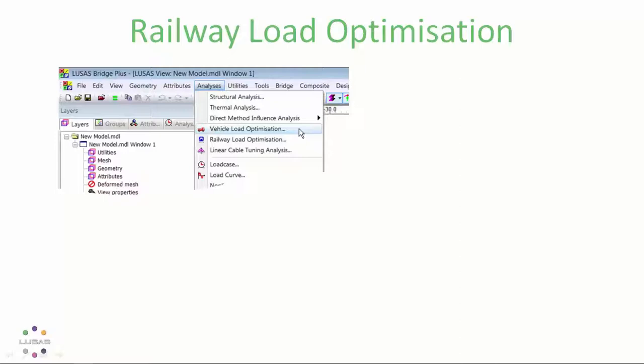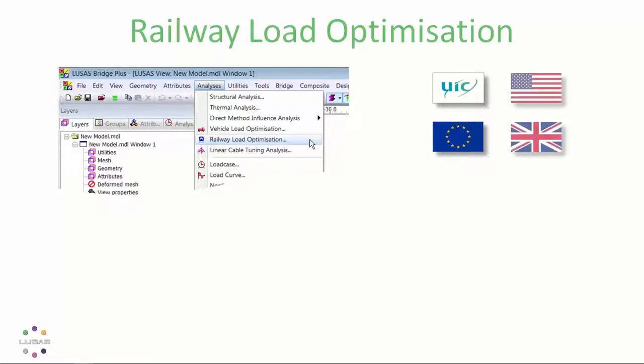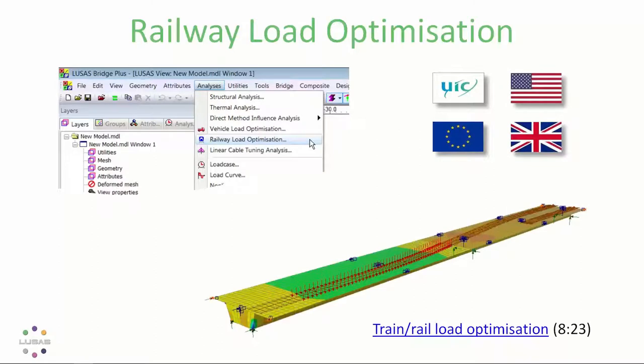Alongside our vehicle load optimiser, you'll also find our railway load optimiser. This works to UIC 776-3, 776, I beg your pardon, and the Euro code with a range of national annexes and also includes the URIMA code and the UK network rail assessment codes. And in all cases deals with curvature of track.